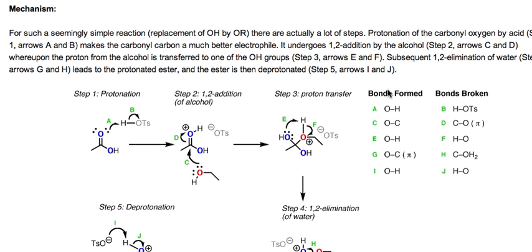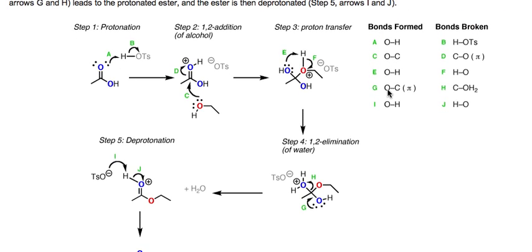Let's talk about the mechanism. This mechanism goes through a very common pattern called the PAPED pattern: protonation, addition, proton transfer, elimination, and deprotonation. This five-step pattern is very common for a lot of reactions of carboxylic acid derivatives.